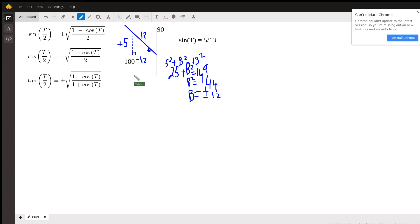And all we really care about to solve any of these is the cosine. So the cosine of theta is the adjacent, which is negative 12, over the hypotenuse, which is 13. And so now we just plug it in here.